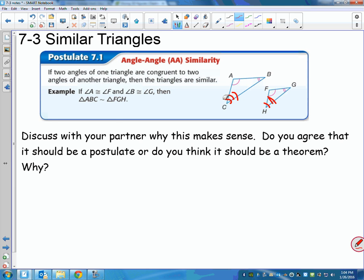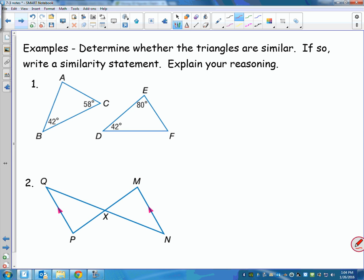So today, when they ask you to prove or justify how you know things are similar, if you know two angles in one triangle are congruent to two angles in another triangle, you can say they're similar by angle-angle. Okay? Determine whether the triangles are similar. If so, write a similarity statement. Explain your reasoning.